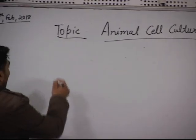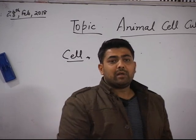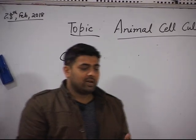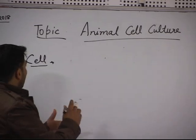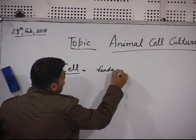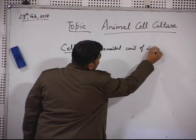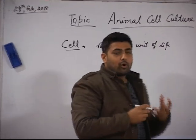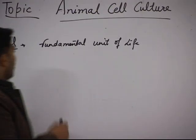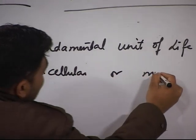First of all, we will discuss about the cell. Before going to discuss how it can be cultured, we should be aware about what a cell is. A cell is basically regarded as a fundamental unit of life. All organisms' bodies consist of one or more cells — organisms can be unicellular or multicellular.